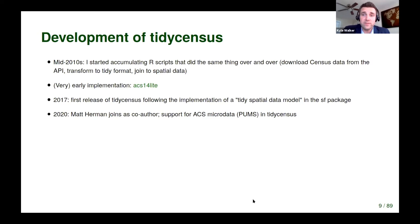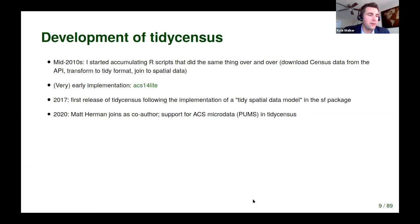Those were the roots of TidyCensus. Eventually I cracked open Hadley Wickham's R Packages book, taught myself how to write a package, and open-sourced TidyCensus in 2017. It has been downloaded hundreds of thousands of times — it's been fantastic to see the uptake. It has a number of contributors now, including Matt Harmon, who became a co-author last year and is responsible for writing a lot of the microdata code. His contributions make it much, much easier to work with microdata from the API.